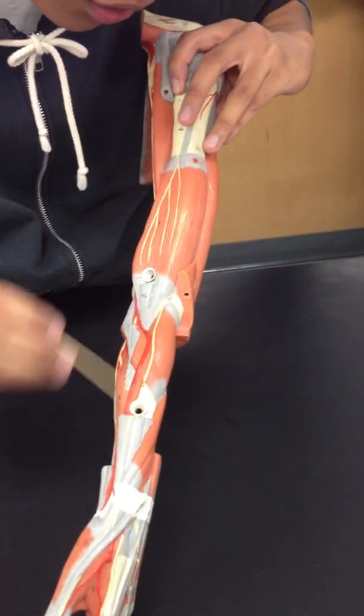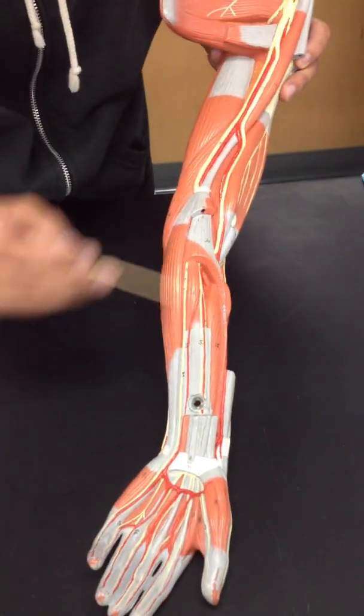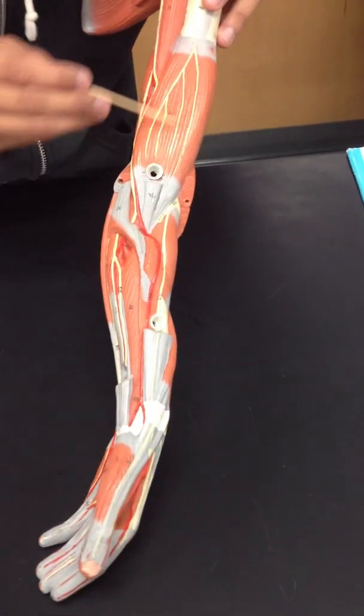And those are the five nerves: radial nerve, median nerve, ulnar nerve, musculocutaneous, and axillary nerve.